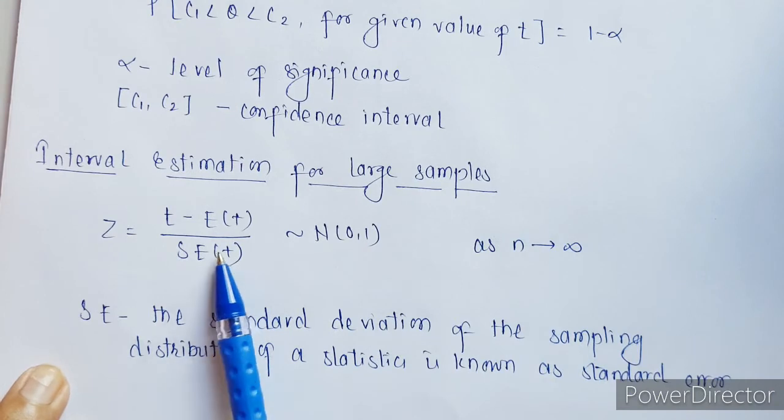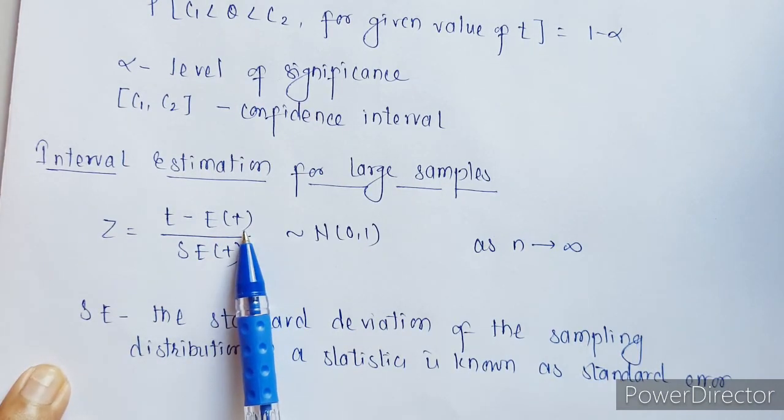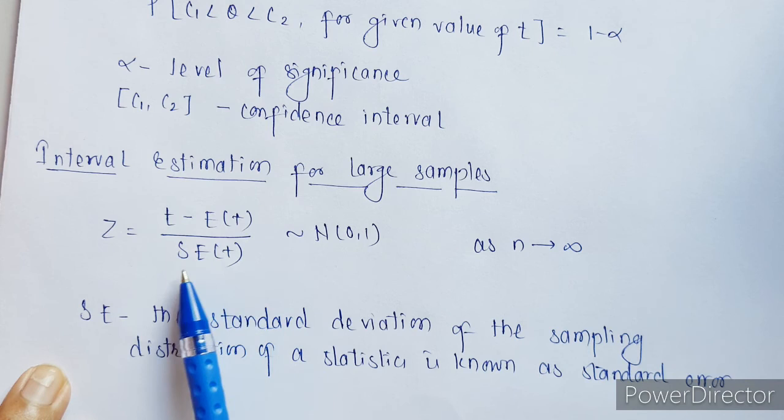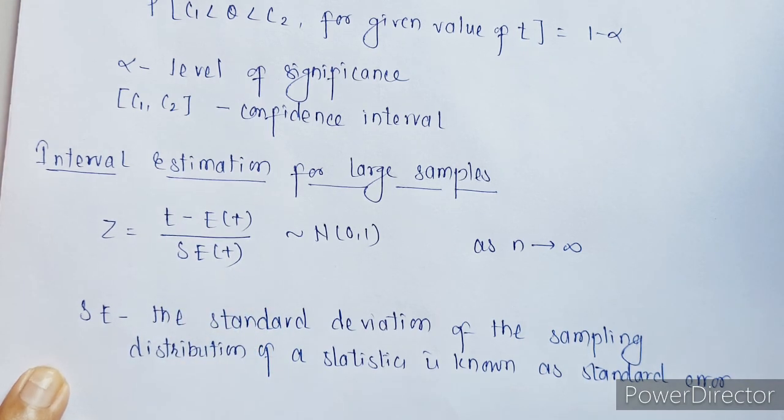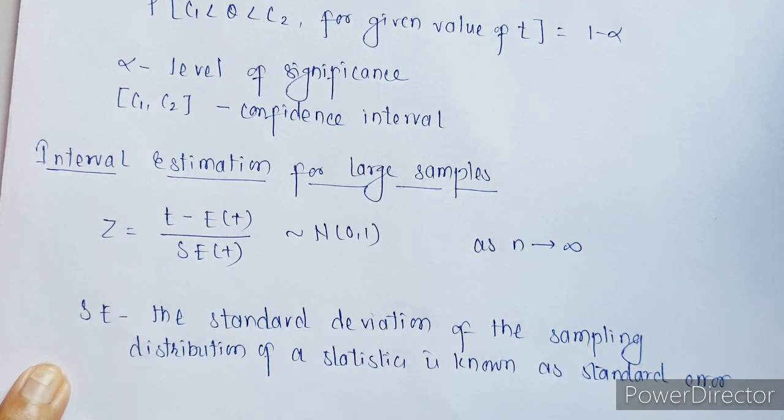Now in this case, this is mean of all the values and this is standard error. Now what is standard error? Standard error is nothing but standard deviation of the sampling distribution.